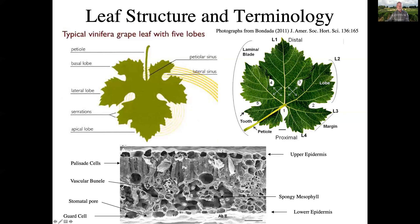We have additional cell types in here. This is the palisade cells — these are dense cells where most of the photosynthesis is going on. Very little photosynthesis is going on in the epidermal layer. We have another type of photosynthetic cell called the spongy mesophyll cells. These are much more loosely packed so that CO2 can diffuse into these air spaces and photosynthesis can occur.